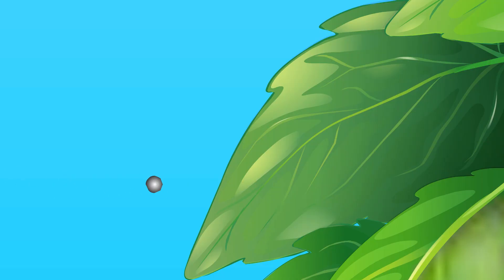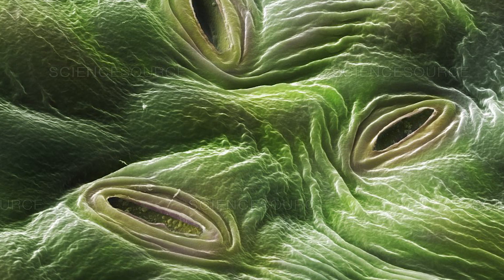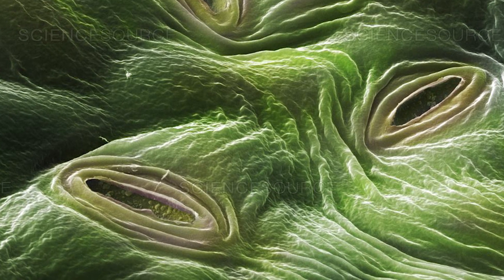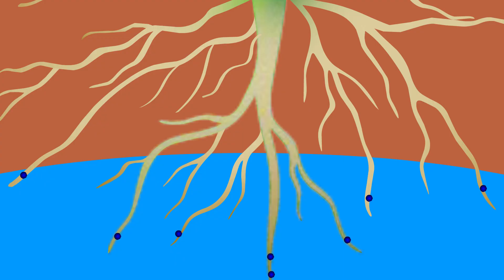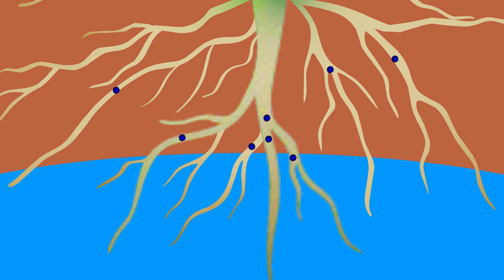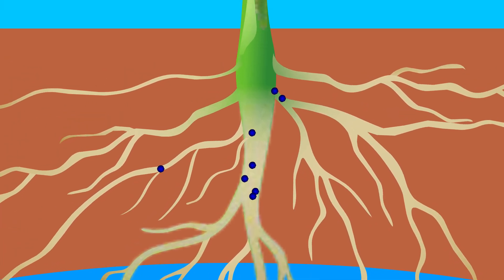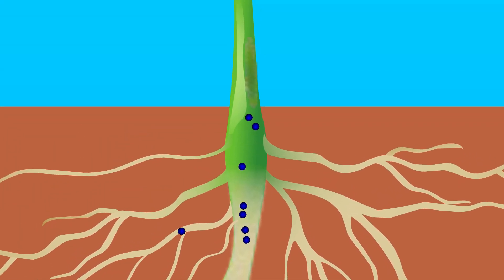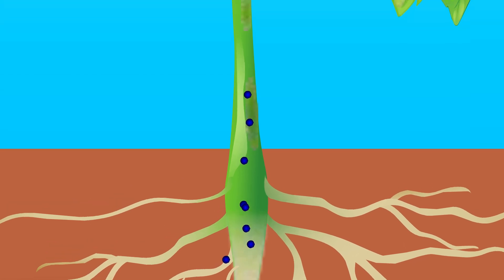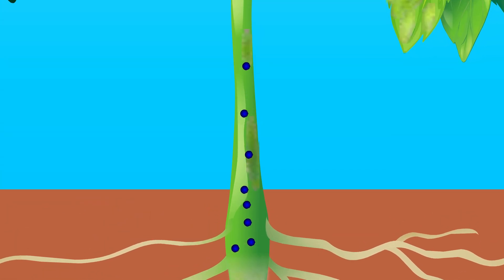Carbon dioxide from the air passes through small pores in the leaves. These pores are called stomata. Water is absorbed by the roots and passes through vessels in the stem on its way to the leaves.